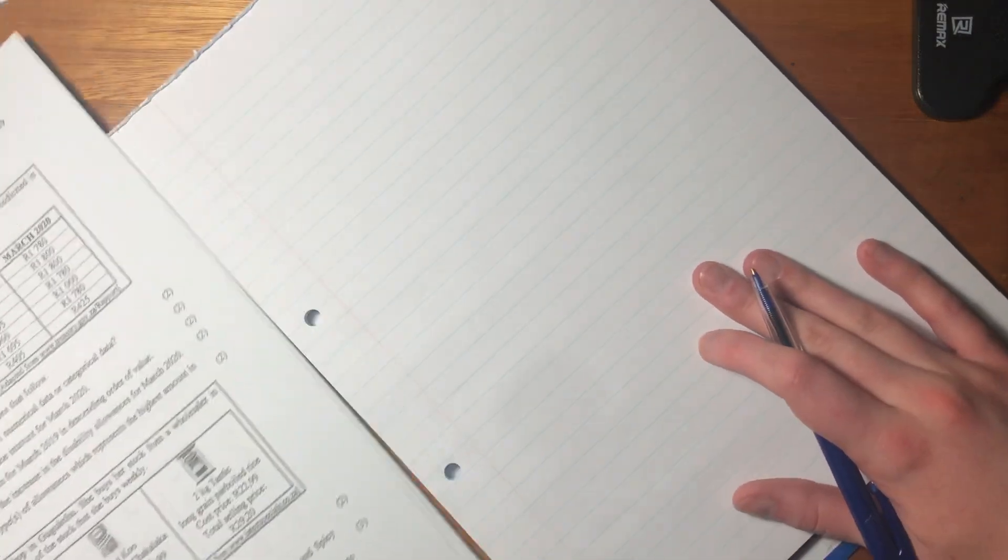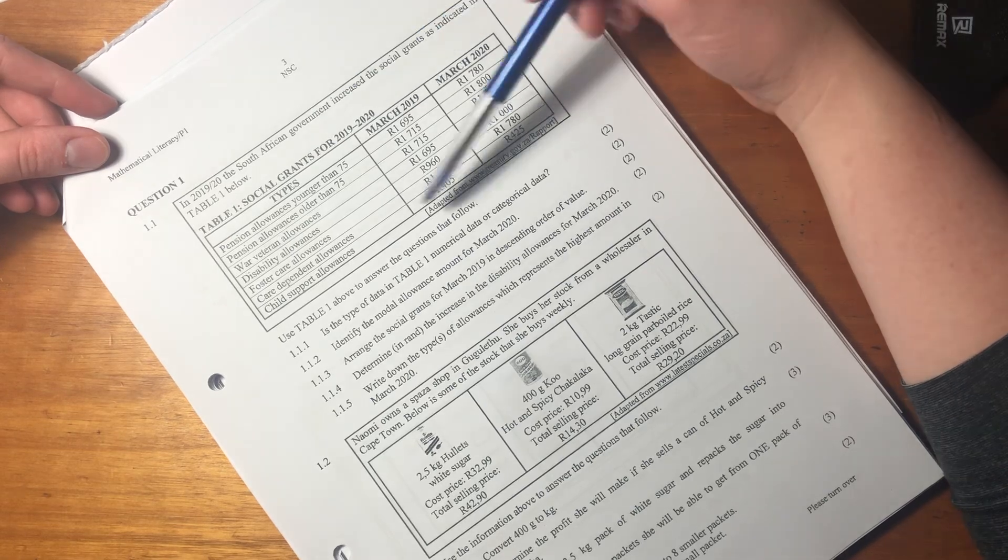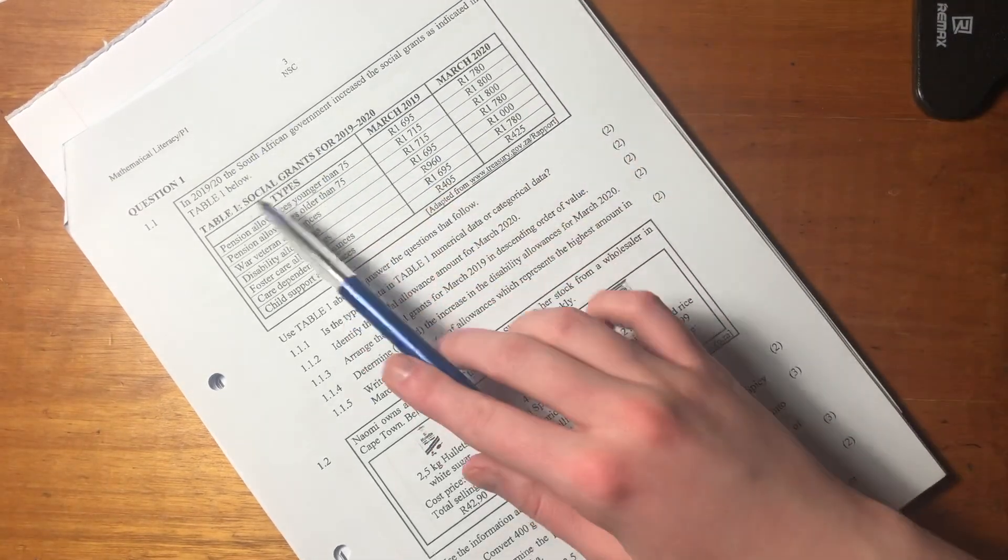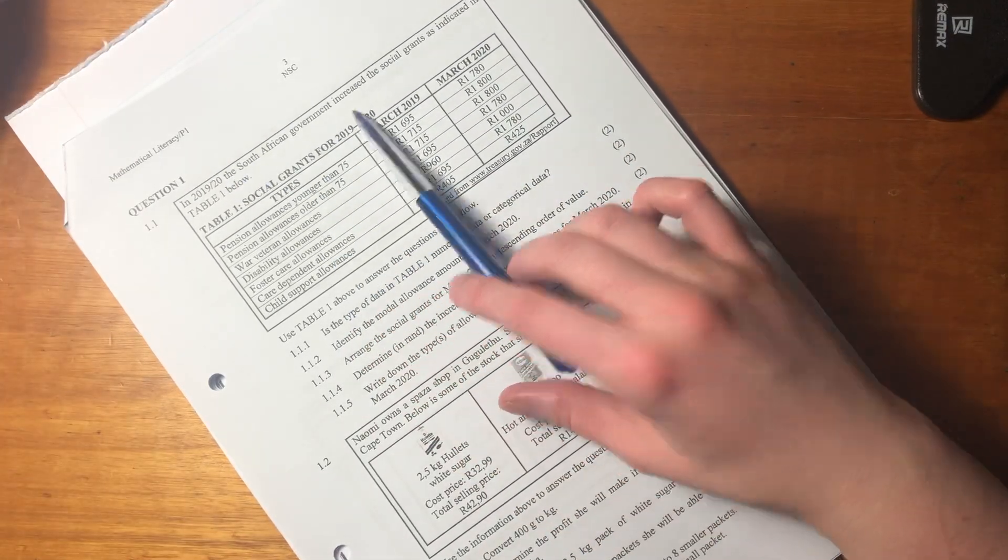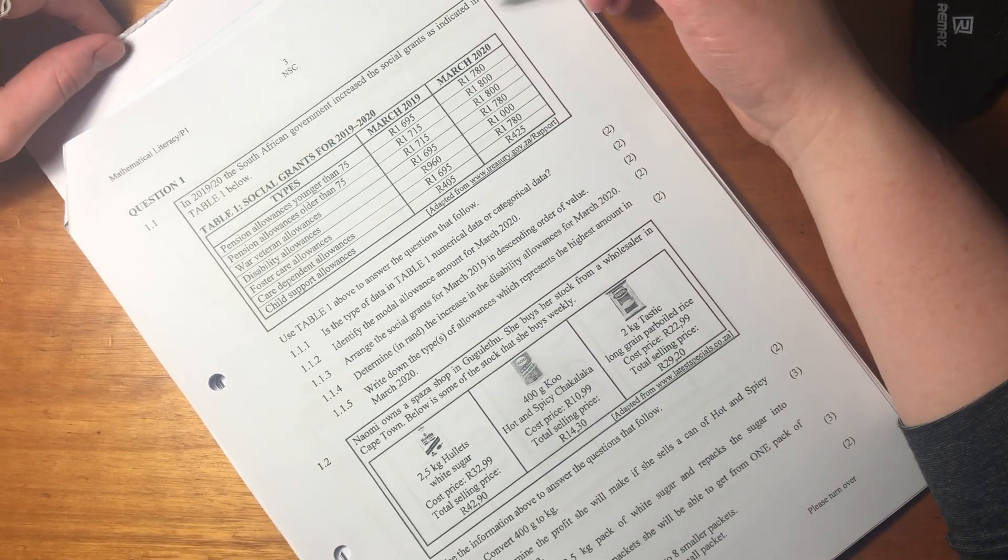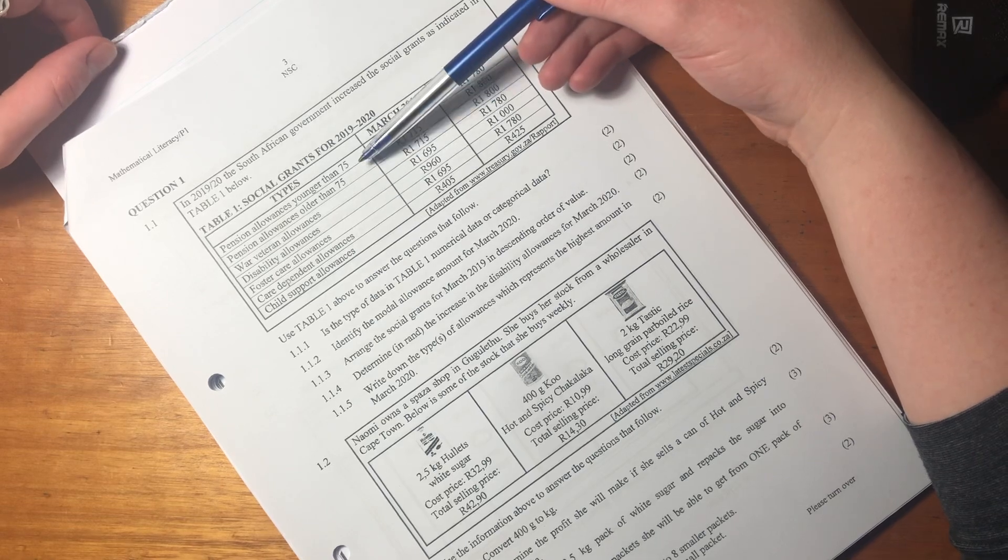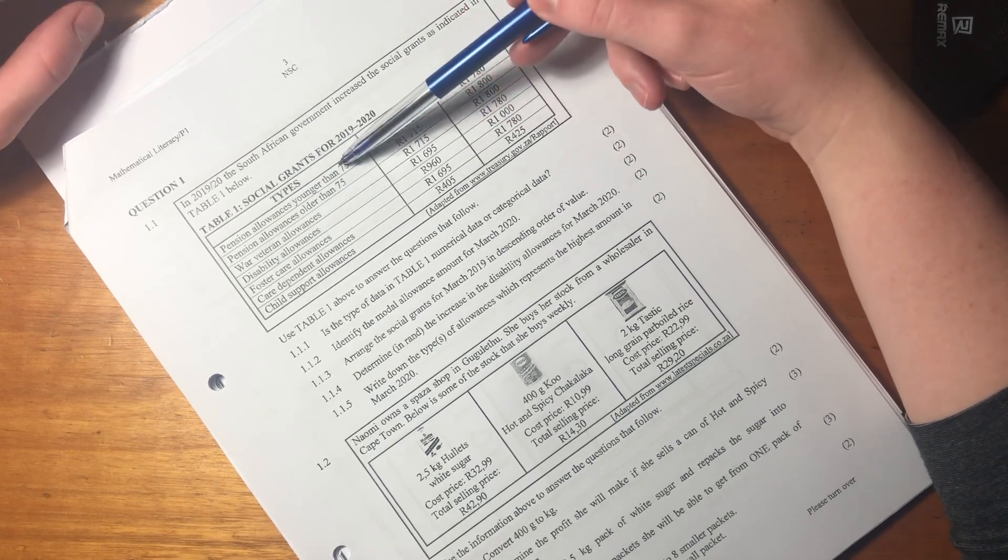Let's jump right in and do question one. For question one we have this question on social grants. It says in 2019 and 2020 the South African government increased their social grants as indicated in table one below.